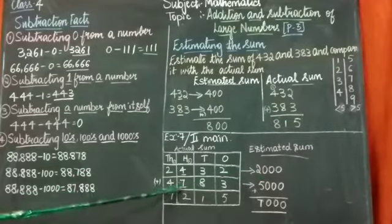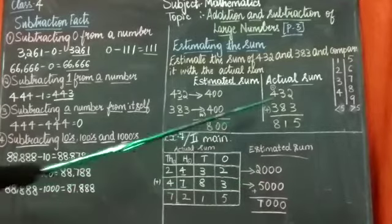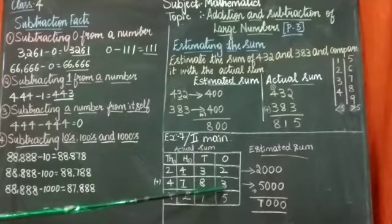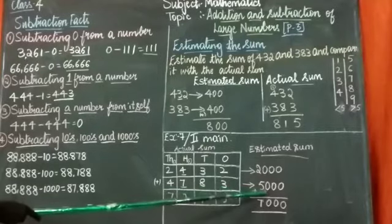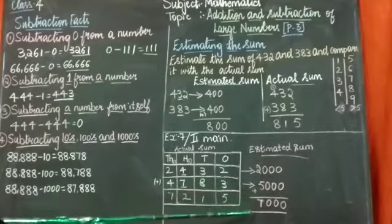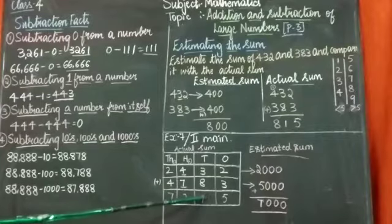Next 7, 7 in hundreds place. It is greater than 5, so I will be rounding off to thousands place here. We will get 5000. The estimated value is 7000. But the actual sum here is 7215.